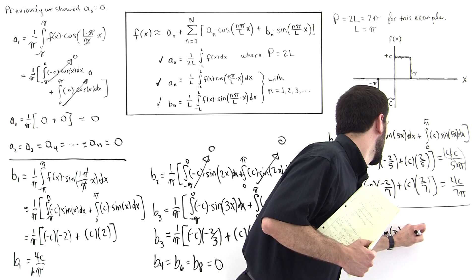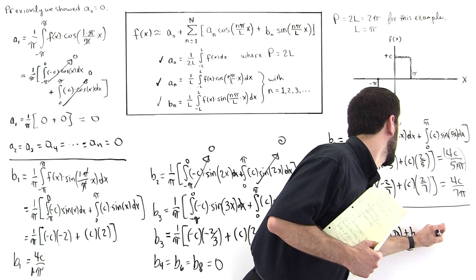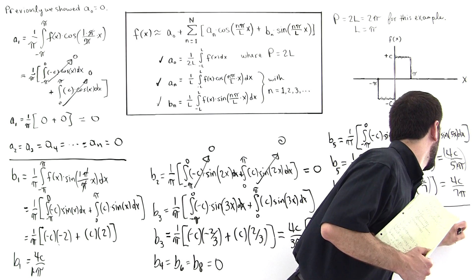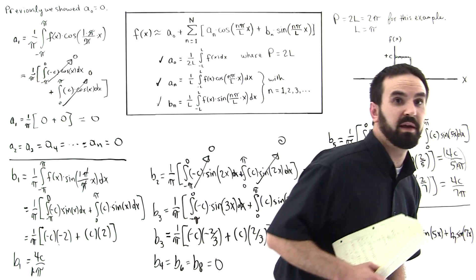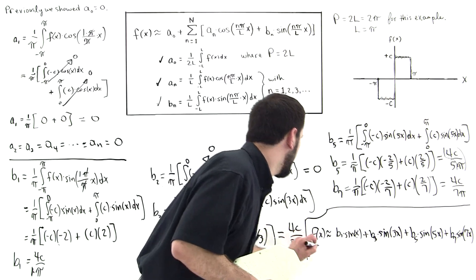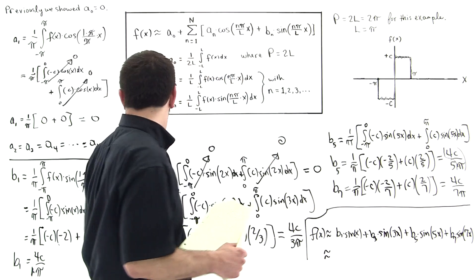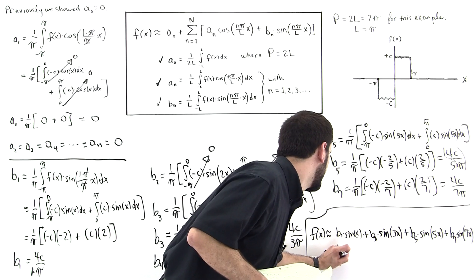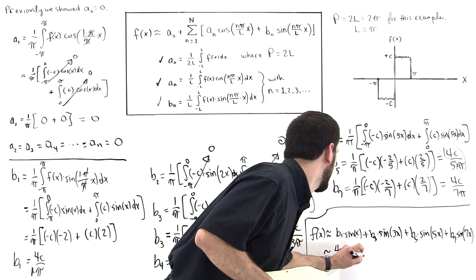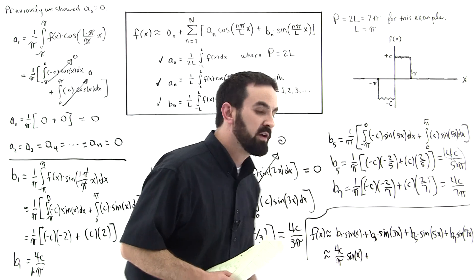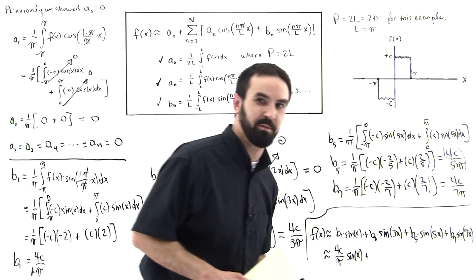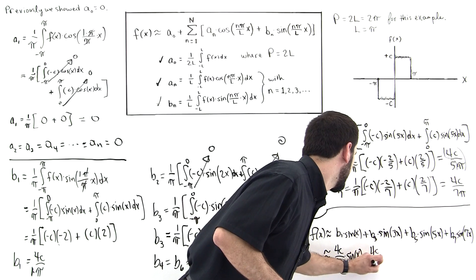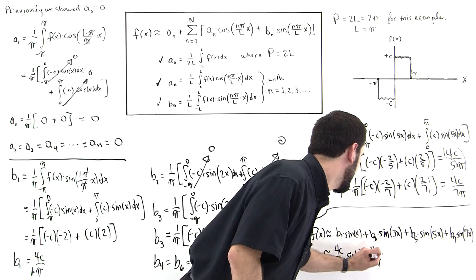Plus b5 times the sine of 5x, plus b7 times the sine of 7x. So plugging in the first one: 4c over pi. You probably need a bucket of popcorn for this problem. So this is 4c over 3pi — yeah, I know the pattern now. 4c over 3pi times the sine of 3x.